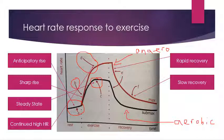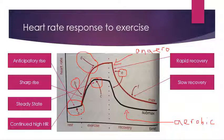On the right side of the graph, both lines show a rapid recovery, labelled E, as we begin to stop exercise. There is a rapid decline in heart rate because we suddenly no longer need as much oxygen to the working muscles and have fewer waste products to remove, producing a very steep line showing rapid recovery.